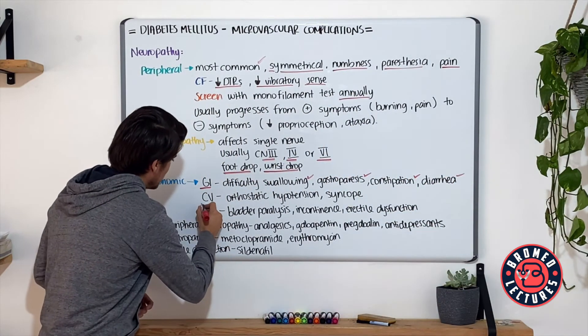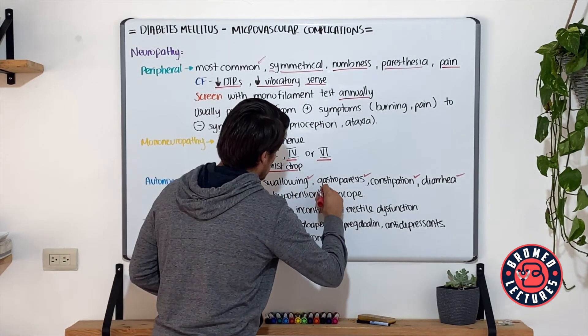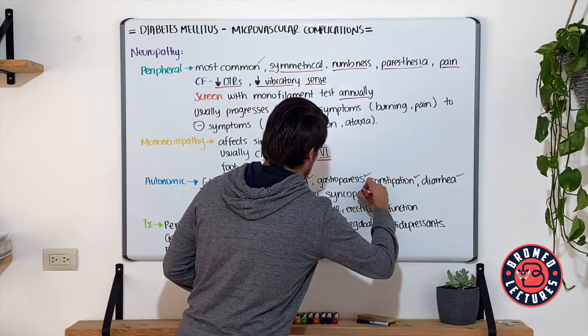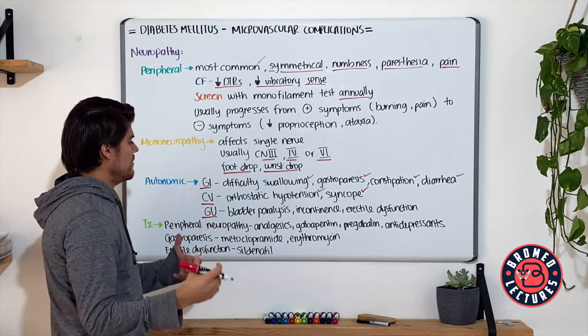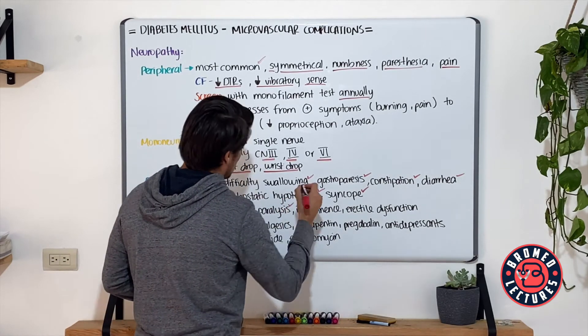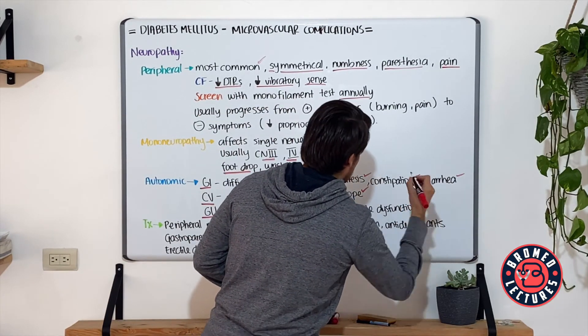With the cardiovascular system, this is where we see orthostatic hypotension, and these patients can develop syncope. With genitourinary, we have bladder paralysis or incontinence, and the development of erectile dysfunction.